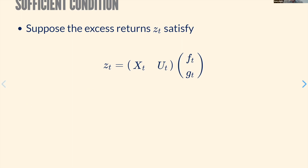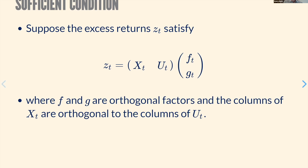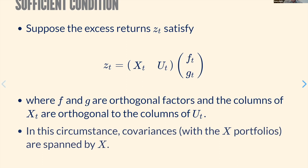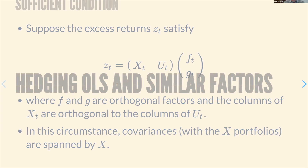For the covariance matrix to have this decomposition, it's clearly sufficient that excess returns have a factor structure where the U loadings and the X loadings on factors are orthogonal. We can always write a factor model with orthogonal factors, but the restriction is that loadings on some factors must be orthogonal to the portfolios defined by the X characteristics.